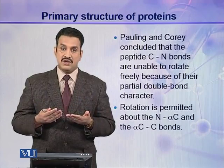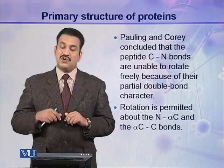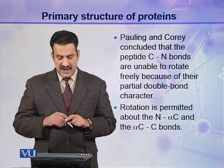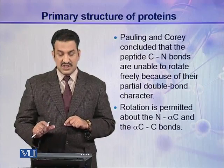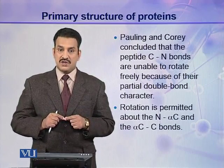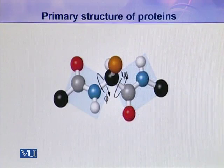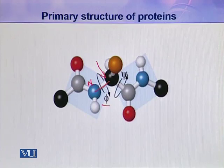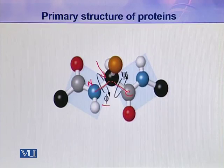Although the peptide bond is rigid, rotation is permitted about two other bonds: the N–alpha carbon linkage and the alpha carbon–C bond. At these two bonds, rotation is allowed, while the peptide bond between C and N remains rigid. Here you can see the alpha carbon and N — the angle of rotation at the N–alpha carbon bond is called phi. The alpha carbon and C bond also allows rotation, and that rotation angle is called psi.